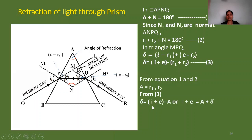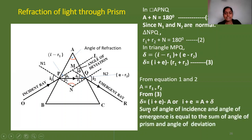This is an important equation for problem solving and for theory exams for 3 marks: the question is to prove that i plus e equals A plus δ. This is an important equation — the sum of the angle of incidence and angle of emergence equals the sum of the angle of the prism and angle of deviation.